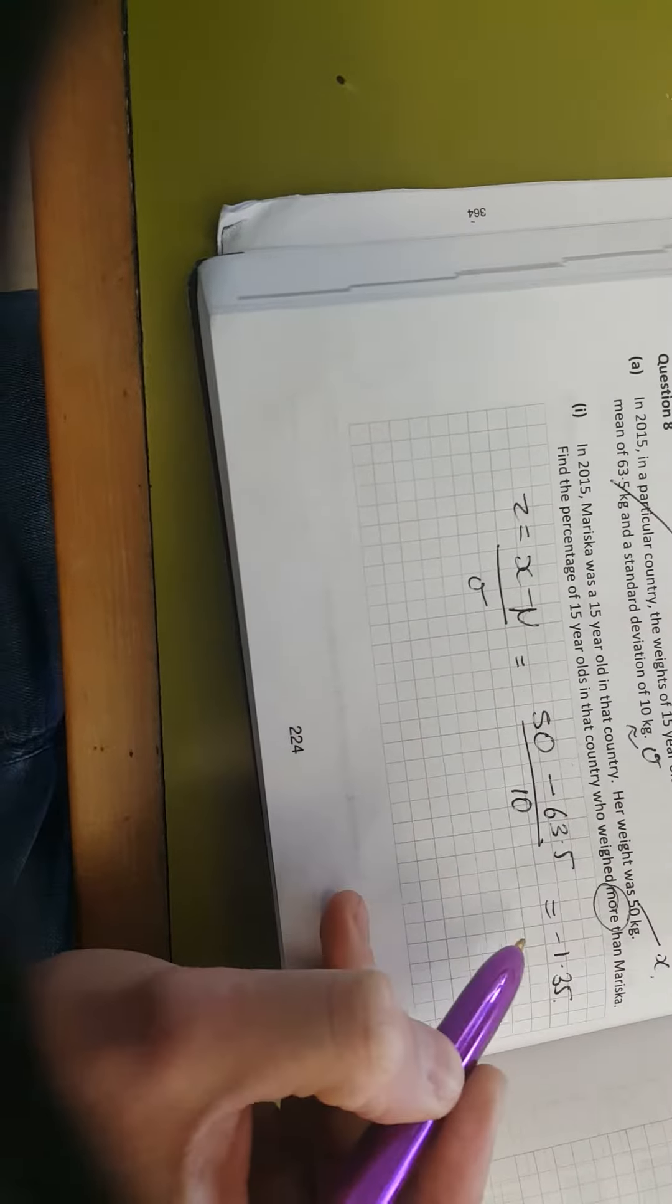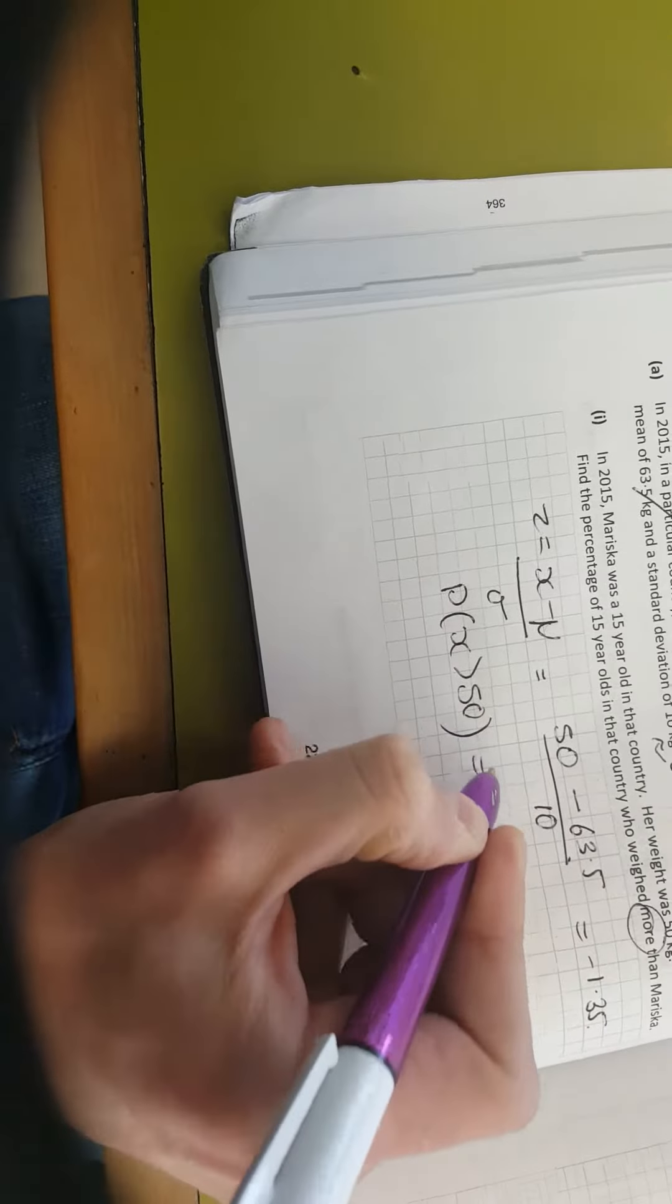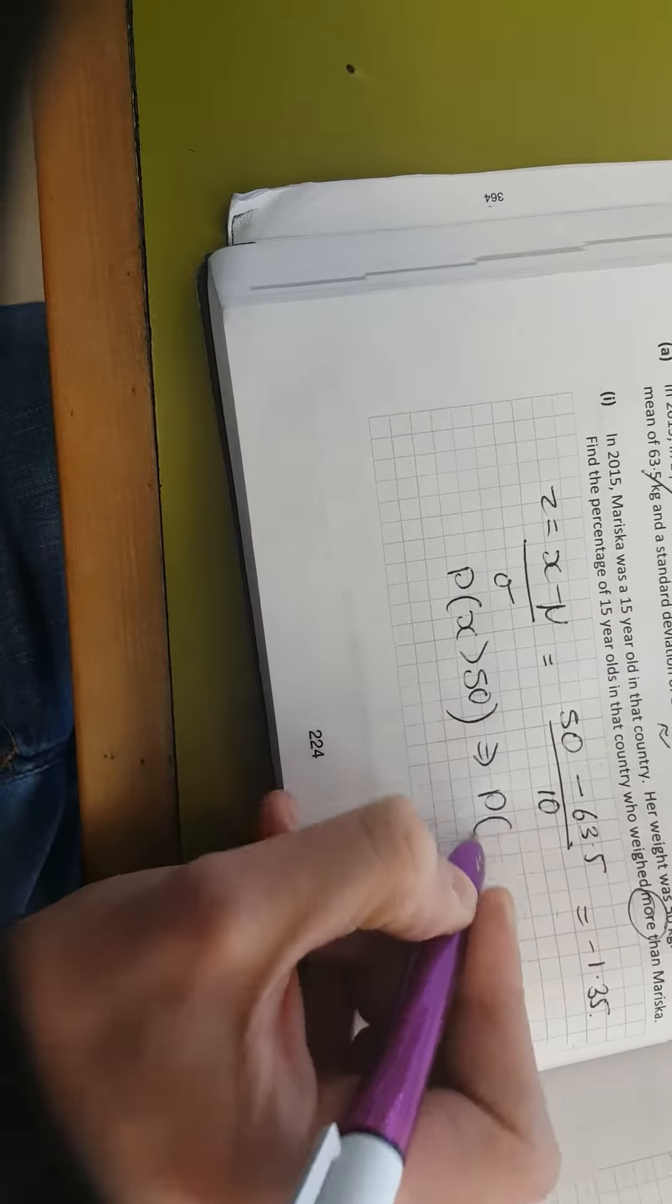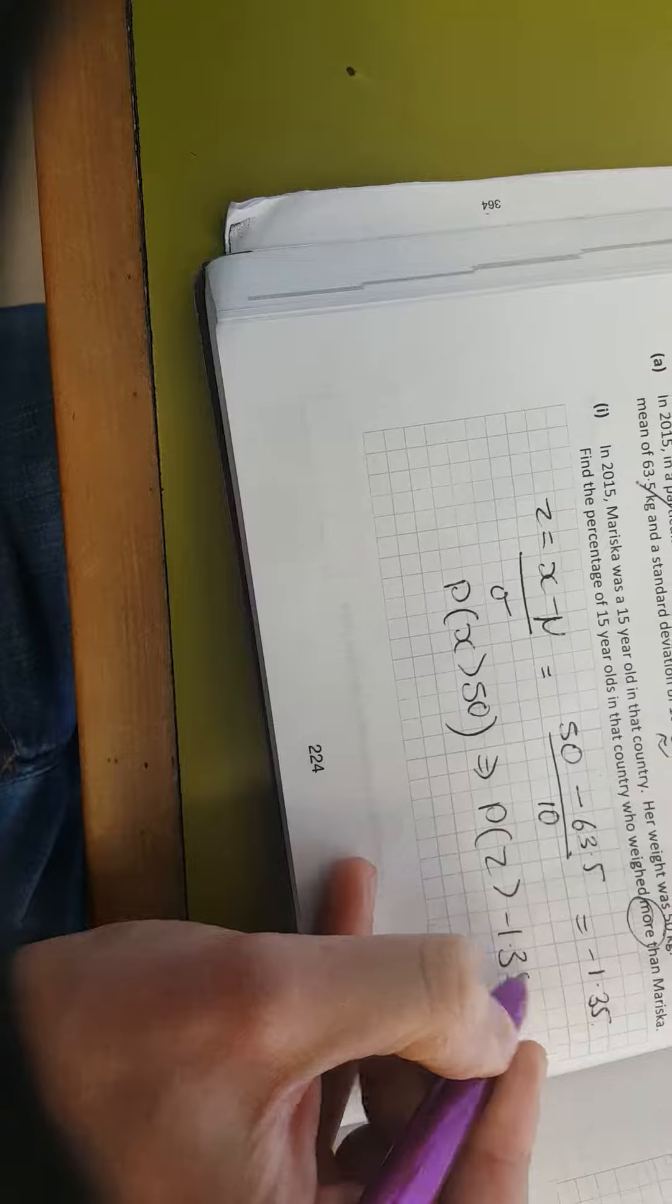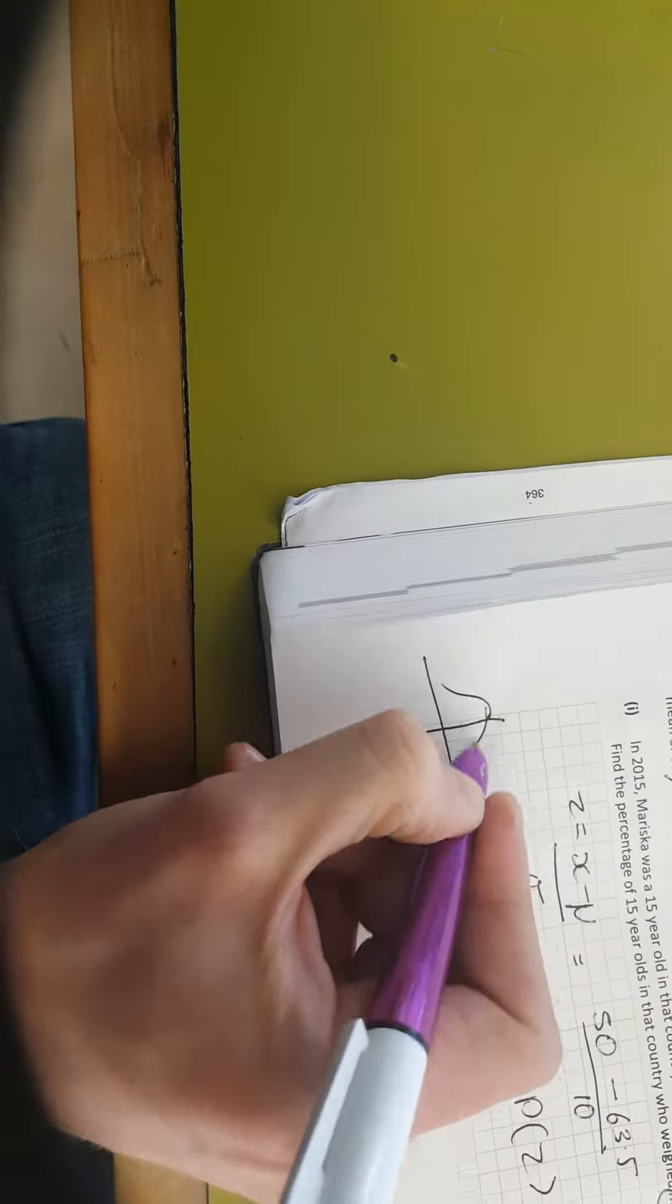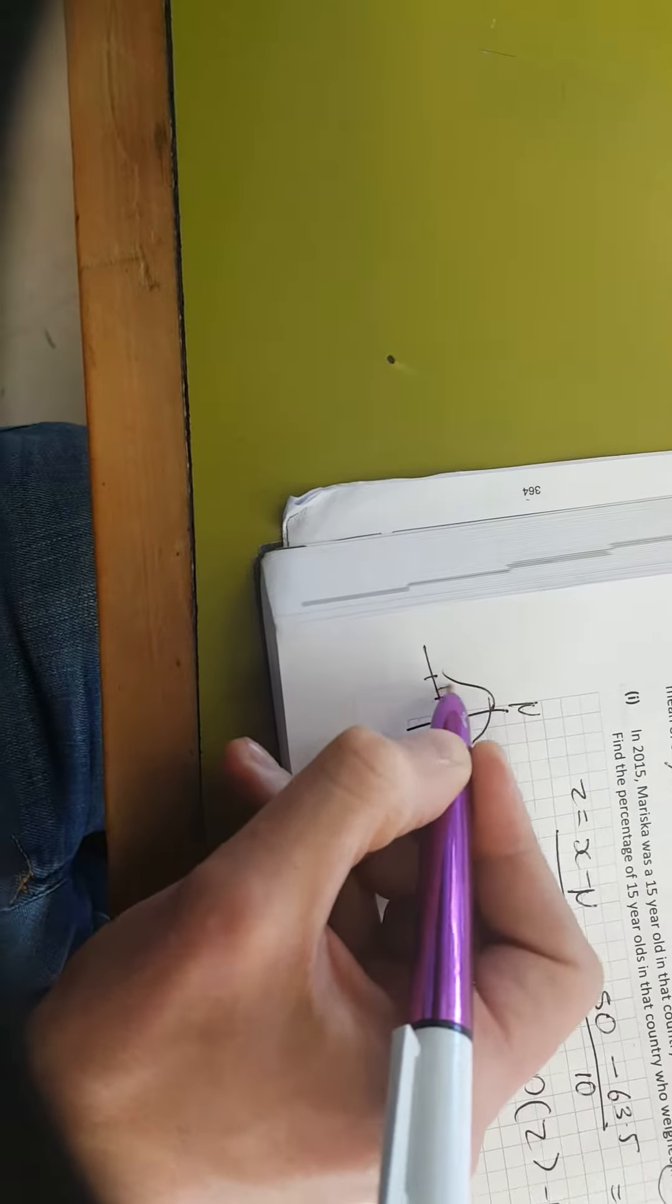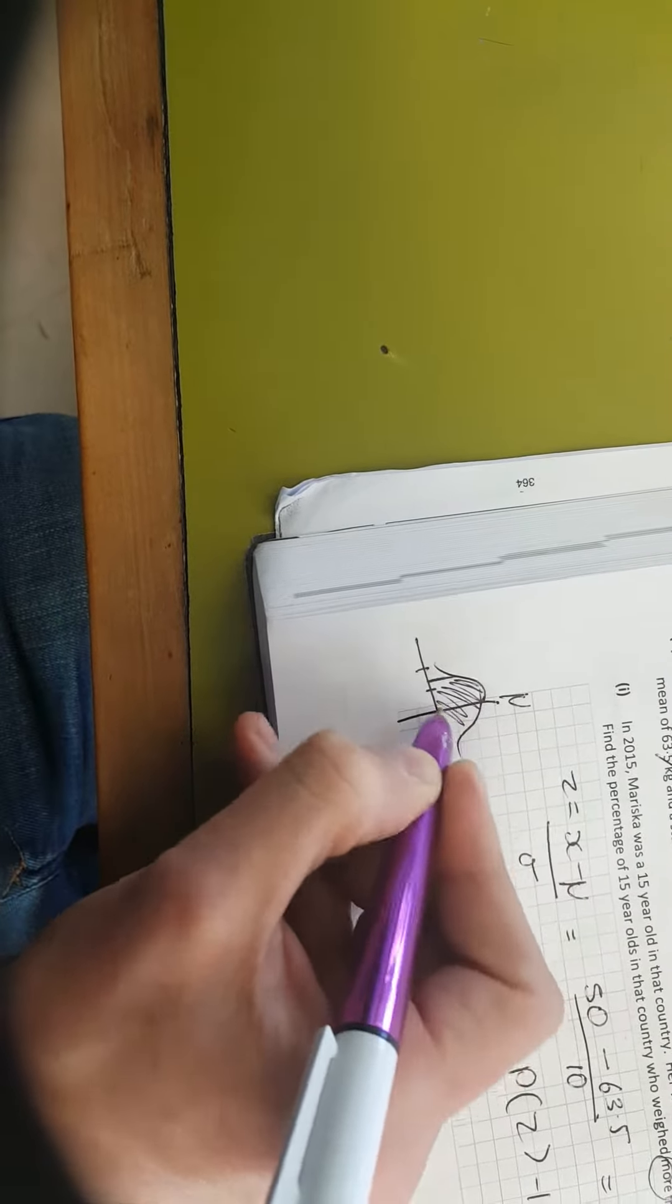So where they've asked how many is more. So instead of saying the probability that x is bigger than 50 kg, we now have this in our z-scores. The probability of z is greater than minus 1.35. So if we're looking at that in a normal distribution, there's your mean. Minus 1.35, somewhere down here. Probability that's bigger than that is like that.